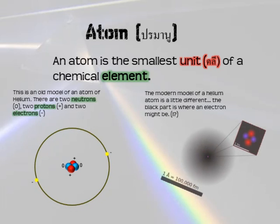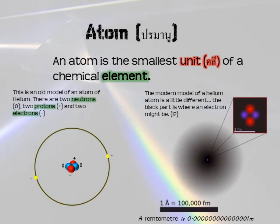The new model is something like this. You can see the nucleus is kind of the same, but outside there is this weird black cloud where the electron might be. We don't really know how the electrons move around the outside or where they are exactly.